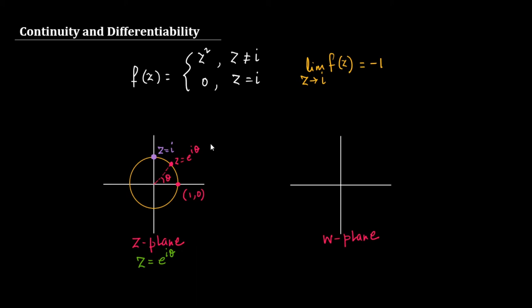Now let us see what will be the image of this circle in the w-plane. Since z = e^(iθ), z² = e^(i·2θ). That means all such z² will also lie on a circle of radius 1, but the angle gets doubled. Here our angle is θ, but in the image our angle is 2θ — the argument of each point gets doubled. So let us also have a unit circle in the w-plane.